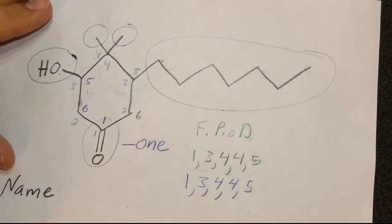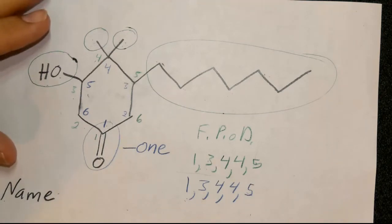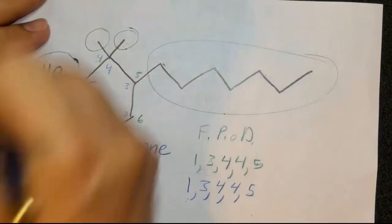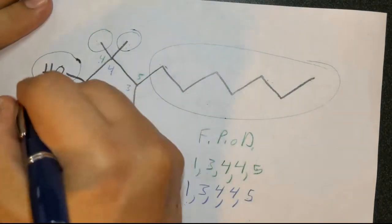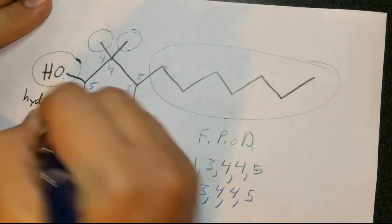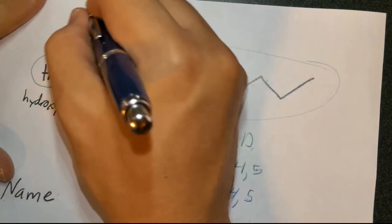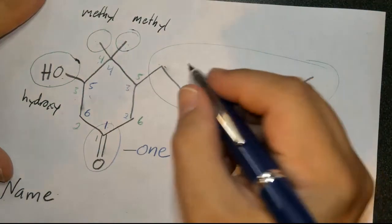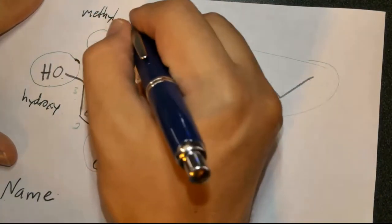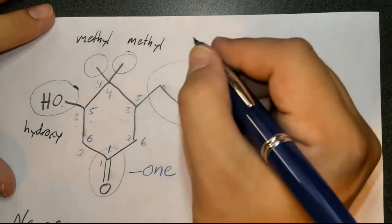So we assign names to the substituents. The OH is called hydroxy — that's the name when it's a substituent. These are both methyls. Since they are identical, we collect them and combine them in the name rather than naming them separately.